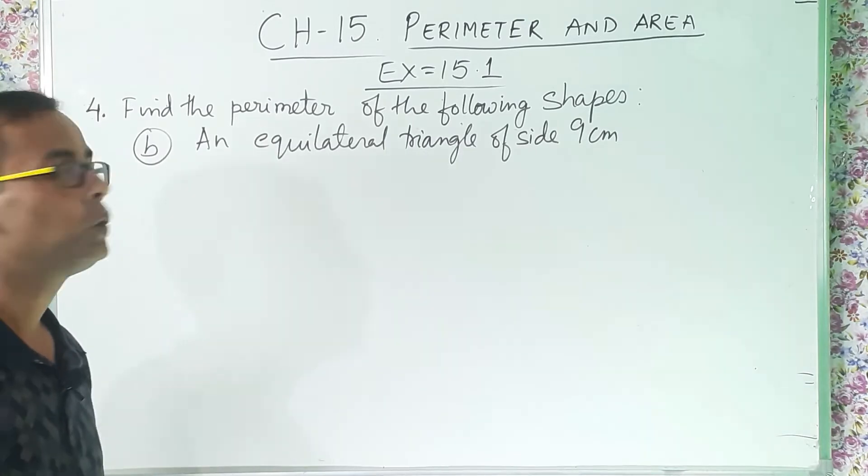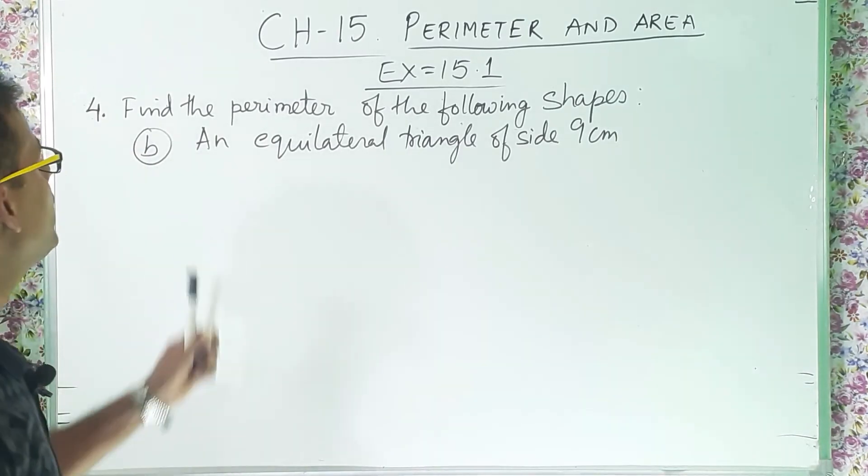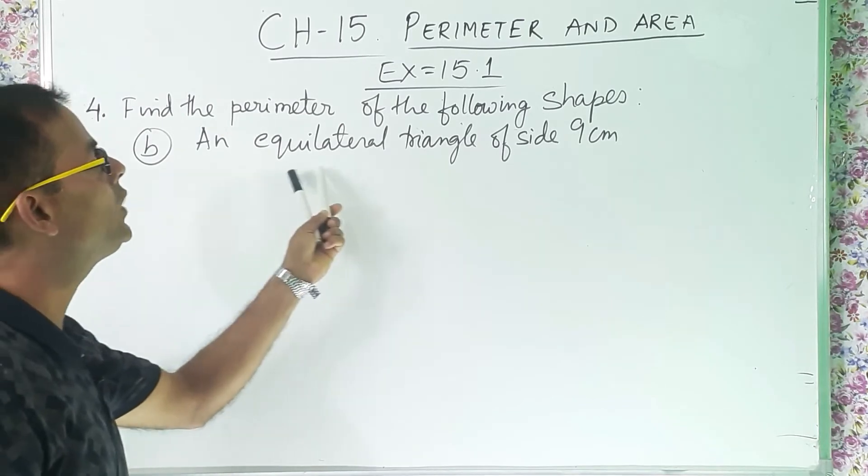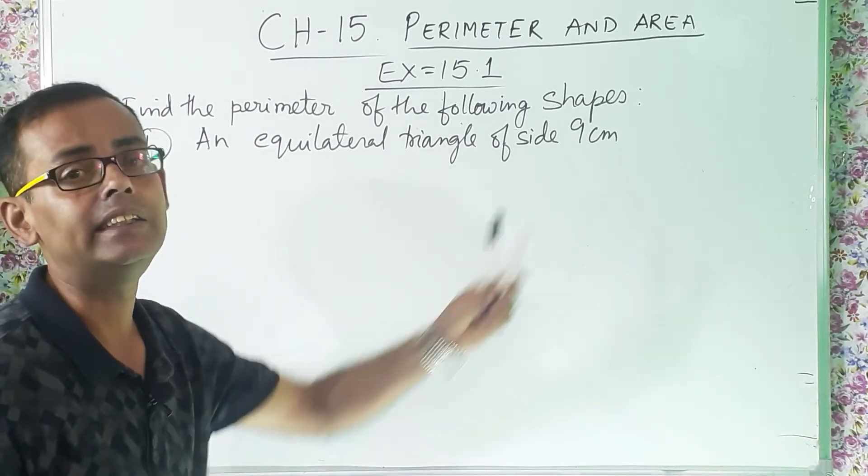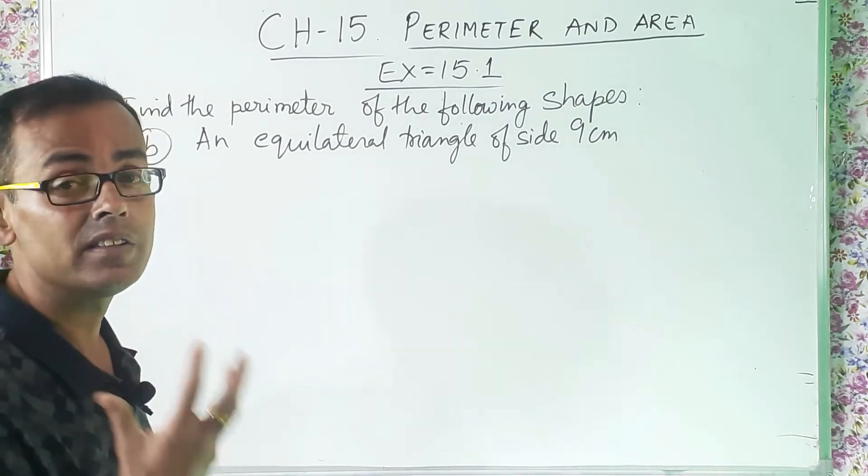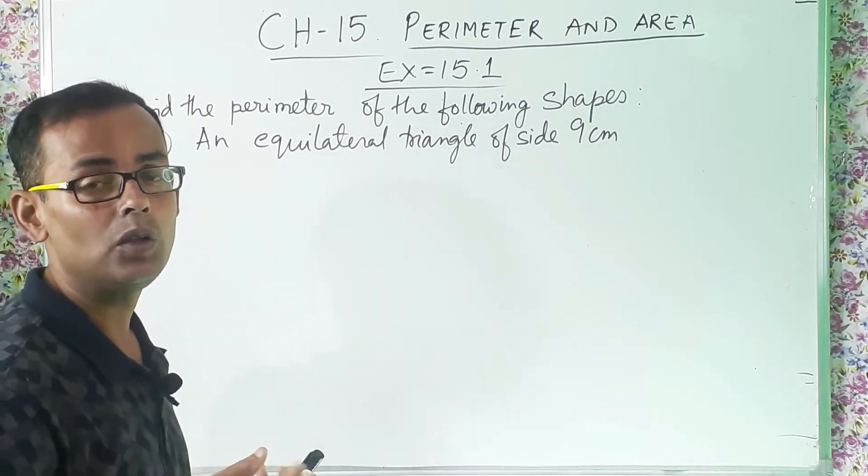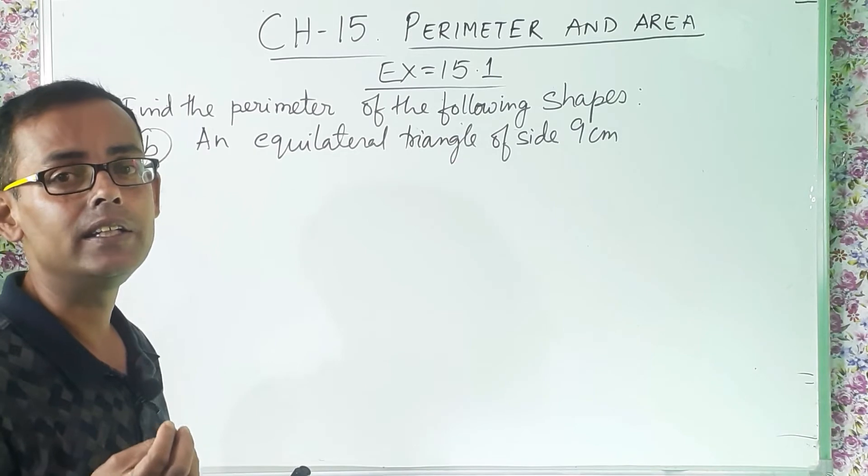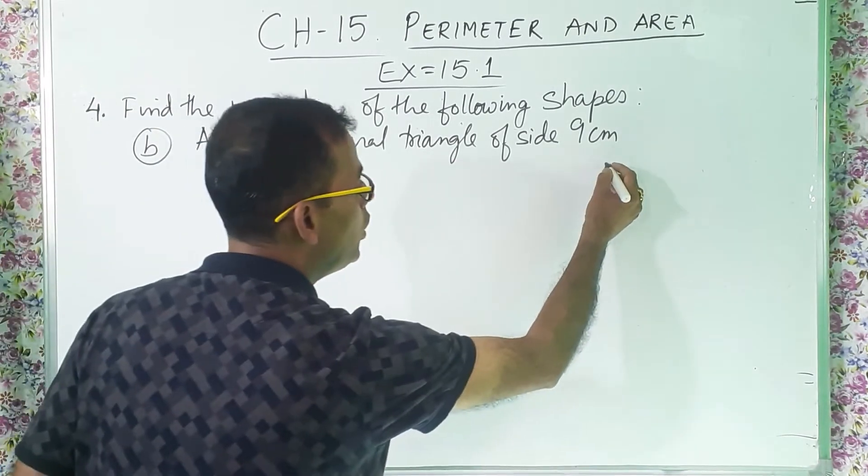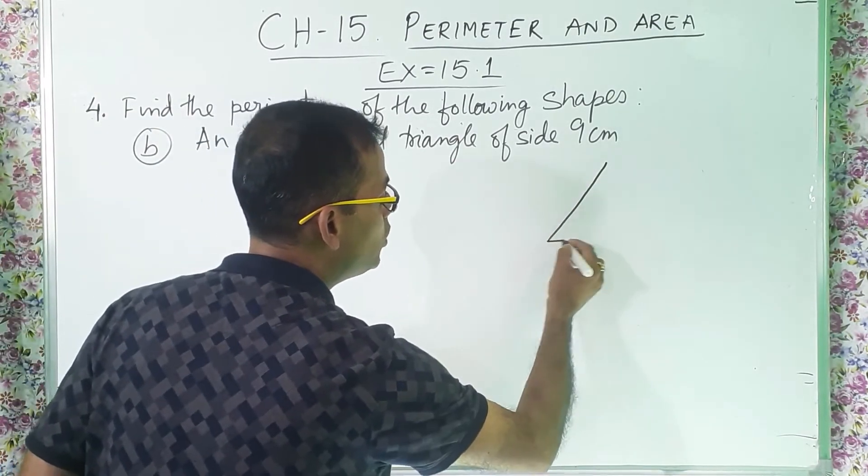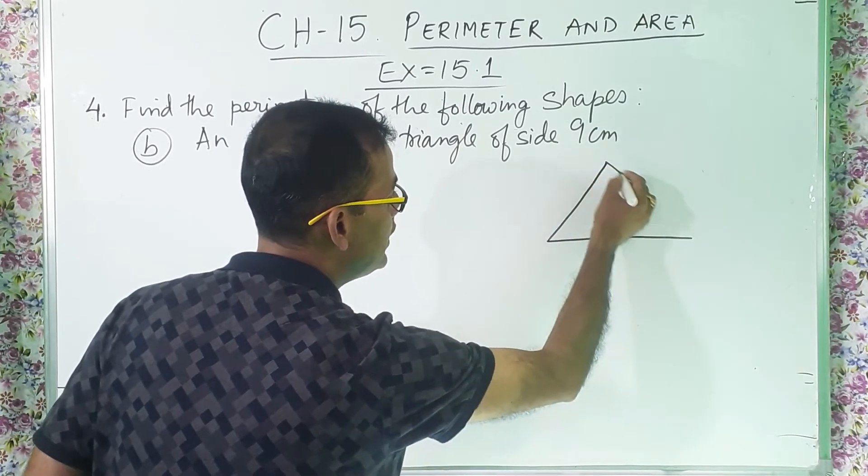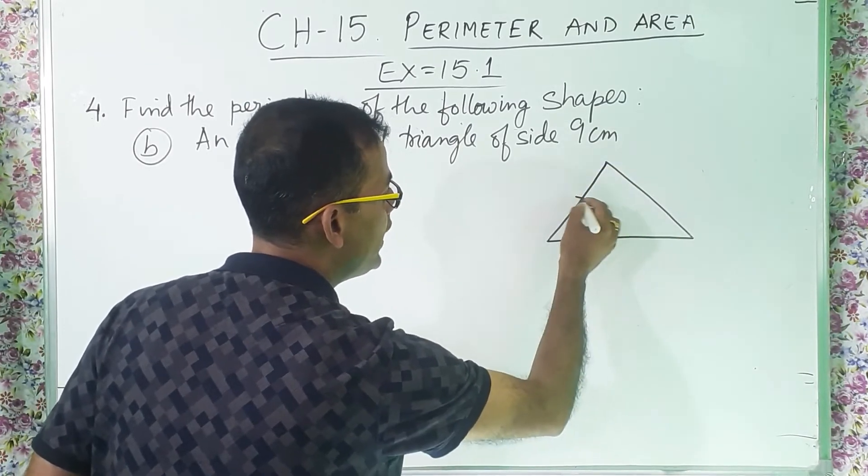Now question number 4b. What is the question? An equilateral triangle of size 9 centimeter. So what is equilateral triangle? Equilateral triangle is a triangle whose three sides are equal. So you have to draw one triangle whose three sides are equal. Freehand diagram, with your pen only you can draw.